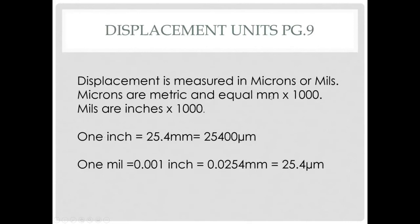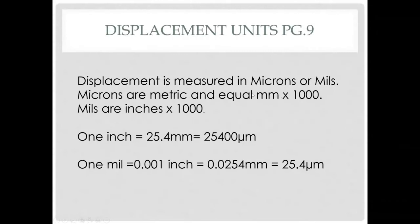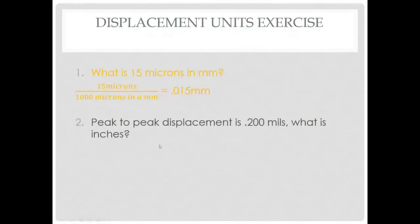Displacement is measured in microns or mils. Microns are metric — millimeters times a thousand. Mils are inches times a thousand, or thousandths of an inch. Here are the conversions, and here's an example of some math — this is about as deep as the math gets. Make sure these are in your formula book. A simple example: what is 15 microns in millimeters? With a thousand microns in a millimeter, the answer is 0.015.